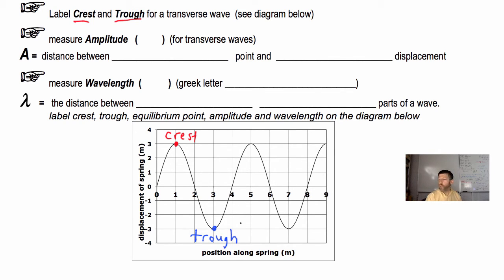And we're also going to now measure the amplitude. Amplitude we use the symbol capital A for. Amplitude is the distance between the blank point and the blank displacement. We saw this last time. What do you call the midpoint of a wave or a vibration where there's no net force on the particle typically? The equilibrium point, so the amplitude is the distance between the equilibrium point and the maximum displacement.